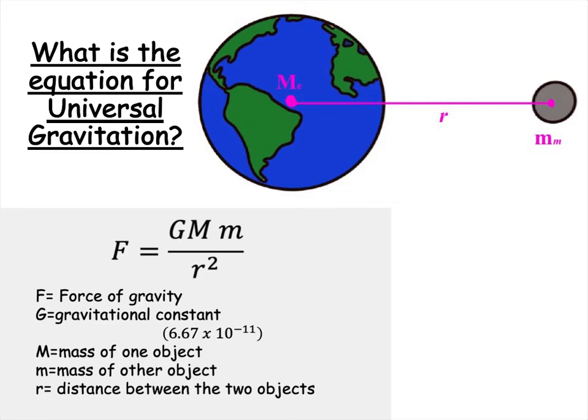When I say distance between the two objects, I'm talking about distance from their centers. The center of one object to the center of the other, just like in our photo up here, center of the earth to center of the moon.